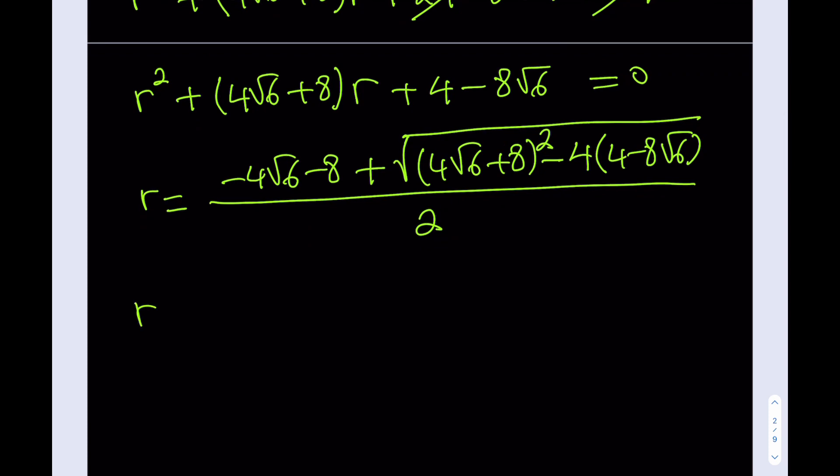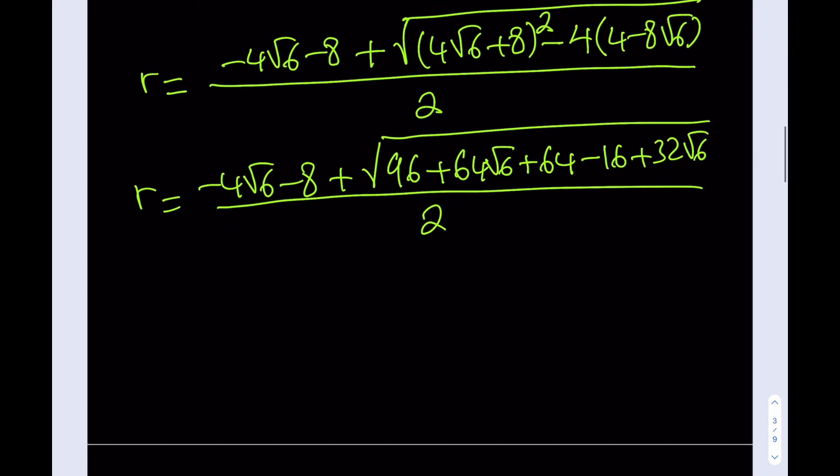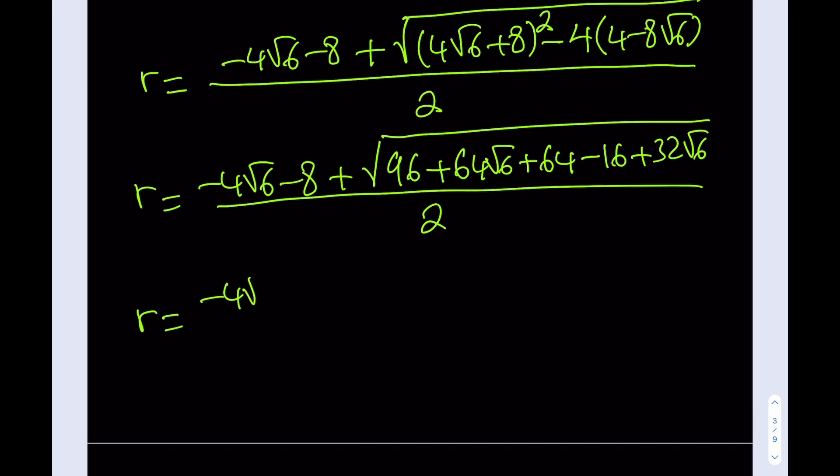Now what we're going to do next is we're going to expand inside the radical and simplify the whole thing as much as we can. Okay, how do you square this? 4√6. 16 times 6, that's going to be 96 plus 4 times 8 is 32, double that, 64√6, plus 8² is going to be 64 minus 16 + 32√6. Beautiful. And the whole thing is divided by 2. Hopefully we can simplify this and get a nicer expression from here. Okay.